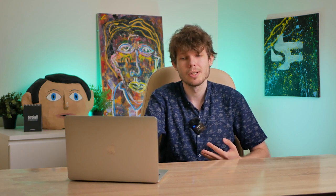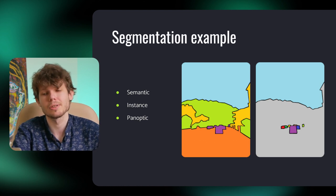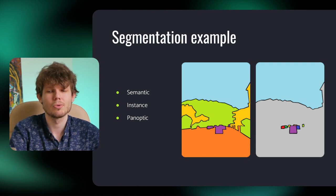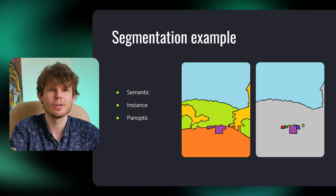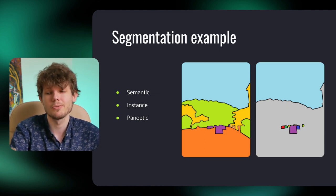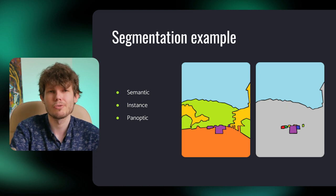There are three types of image segmentation: semantic, instance, and panoptic. Semantic segmentation works with class labels for each pixel, so our example will look like shown in the first image. Each car will be labeled the same, so different cars will be merged into one car region.